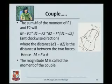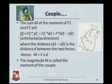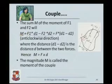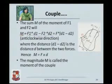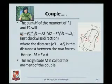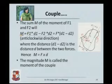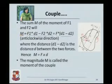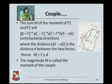D1 minus D2, let us say, is D. So the couple is going to have the effect of rotation, and that rotation is going to be equal to M equals F into D, where F is the magnitude of any one of the forces and D is the distance between the two forces. The moment of the couple is given by M equals F1 into D1 minus F2 into D2. Since F1 and F2 are the same — both equal to F — that comes to F into (D1 minus D2). If we say D1 minus D2 equals D, then we have the moment of the couple M equal to F times D. The magnitude M is called the moment of the couple.